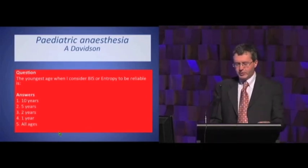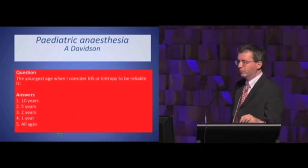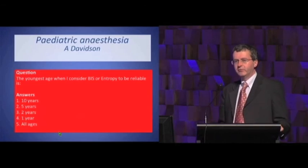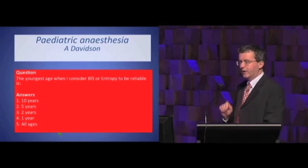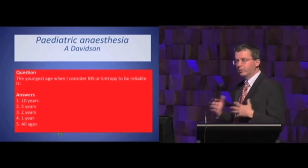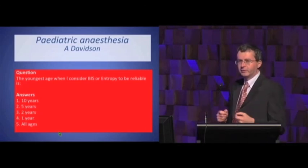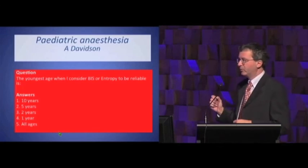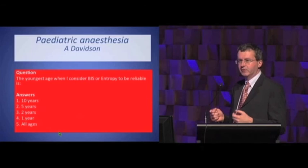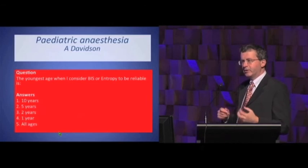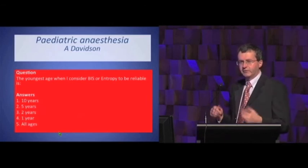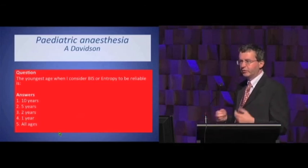Interesting results. I frequently get asked: what is the youngest age group that BIS or entropy actually works? It's a very difficult question to answer, because it's hard to know what you mean by 'does the BIS actually work?' The BIS or entropy is trying to give you a number representing depth of anaesthesia. But as Jamie said before, there actually is no such thing as depth of anaesthesia — it's an abstract construct. So if you're trying to say, does it measure depth of anaesthesia, and depth of anaesthesia doesn't really exist as a real entity, then it's almost impossible to work out whether these machines actually work.